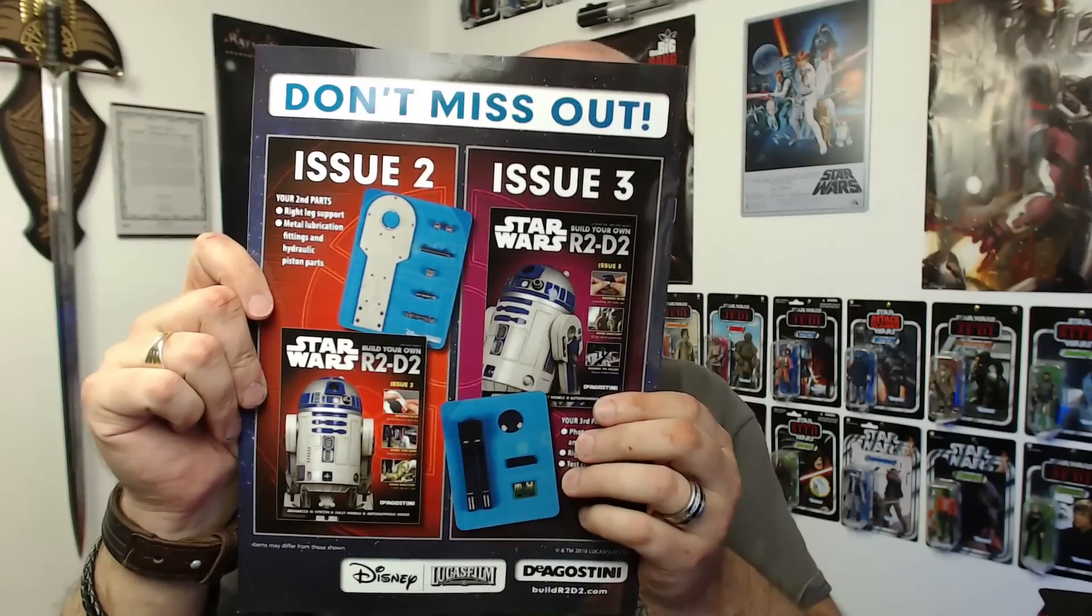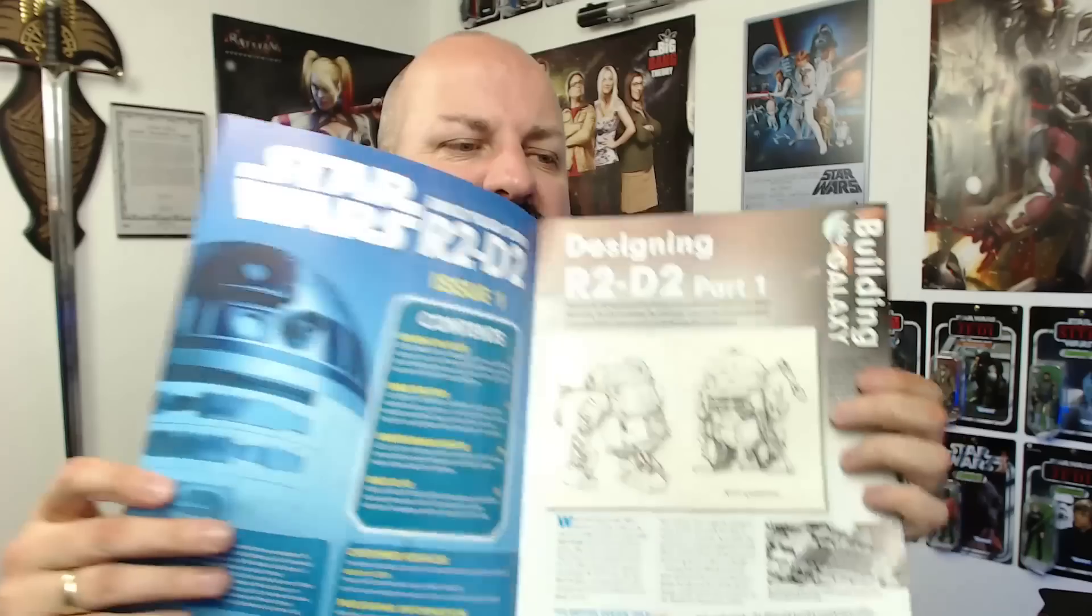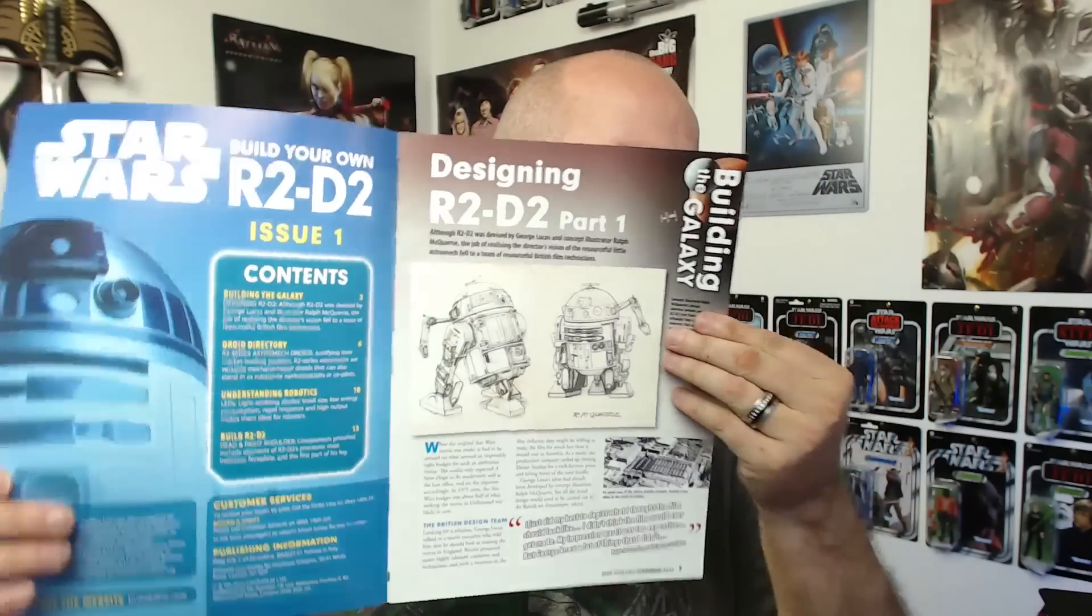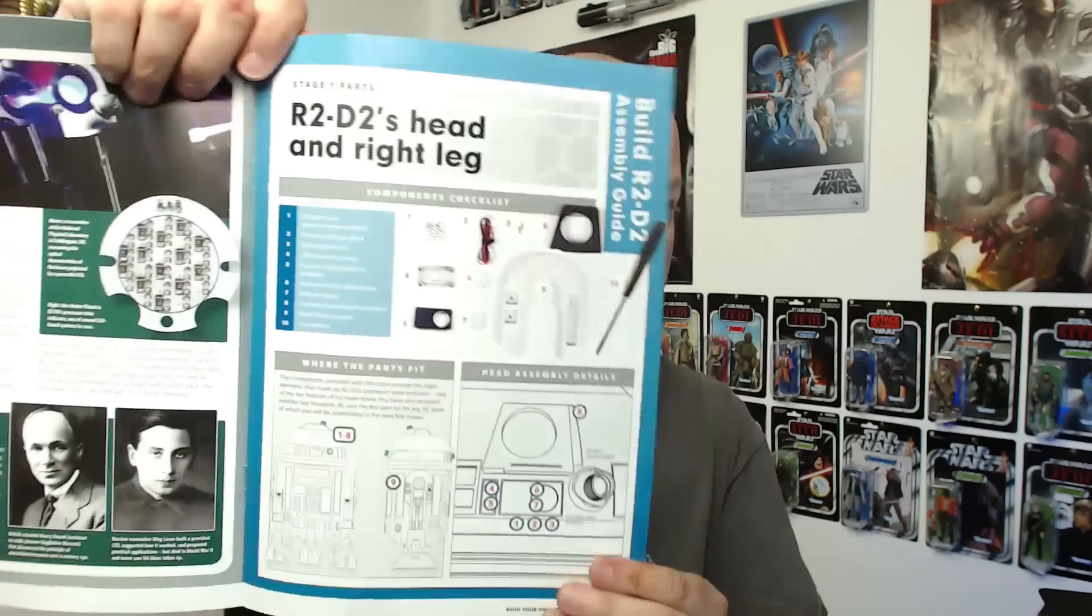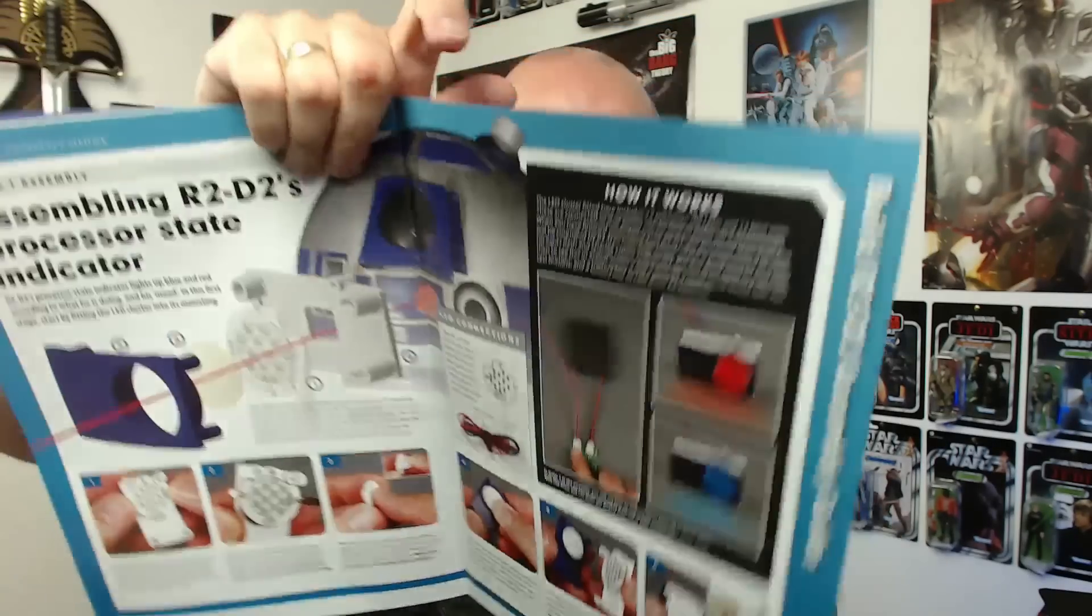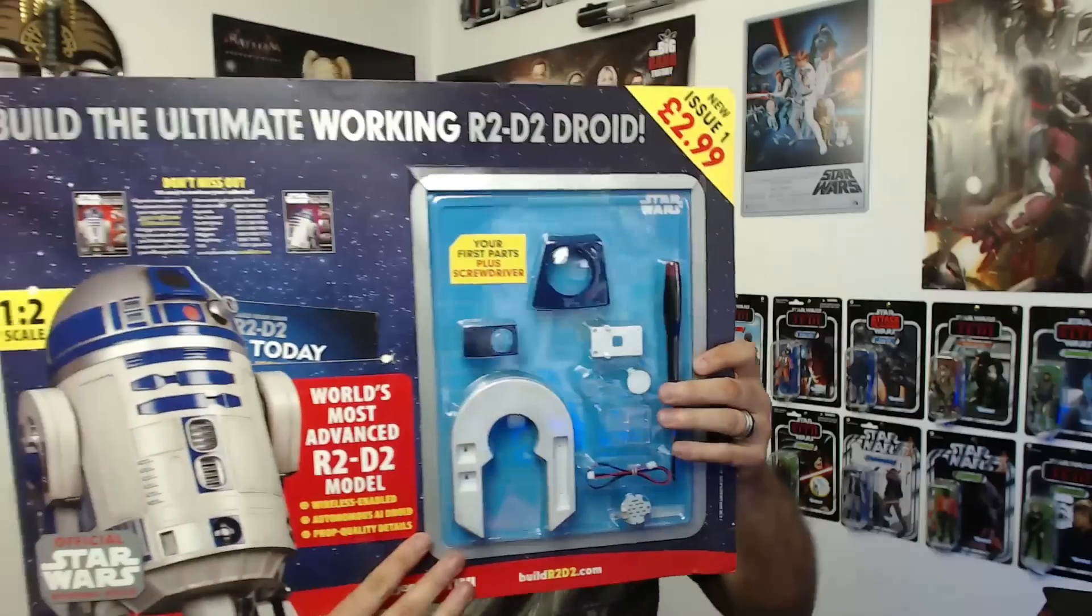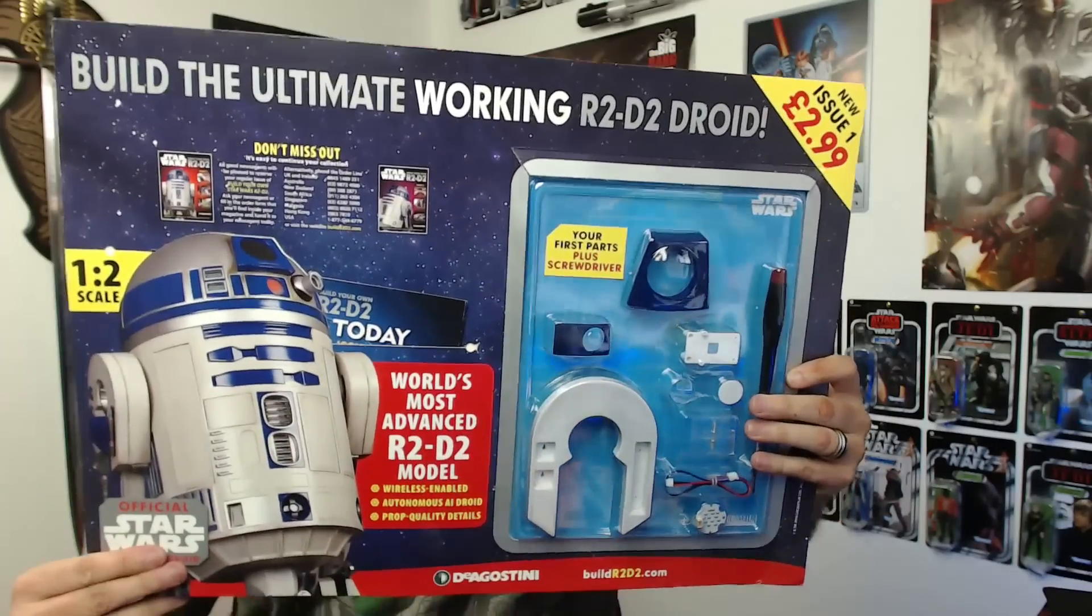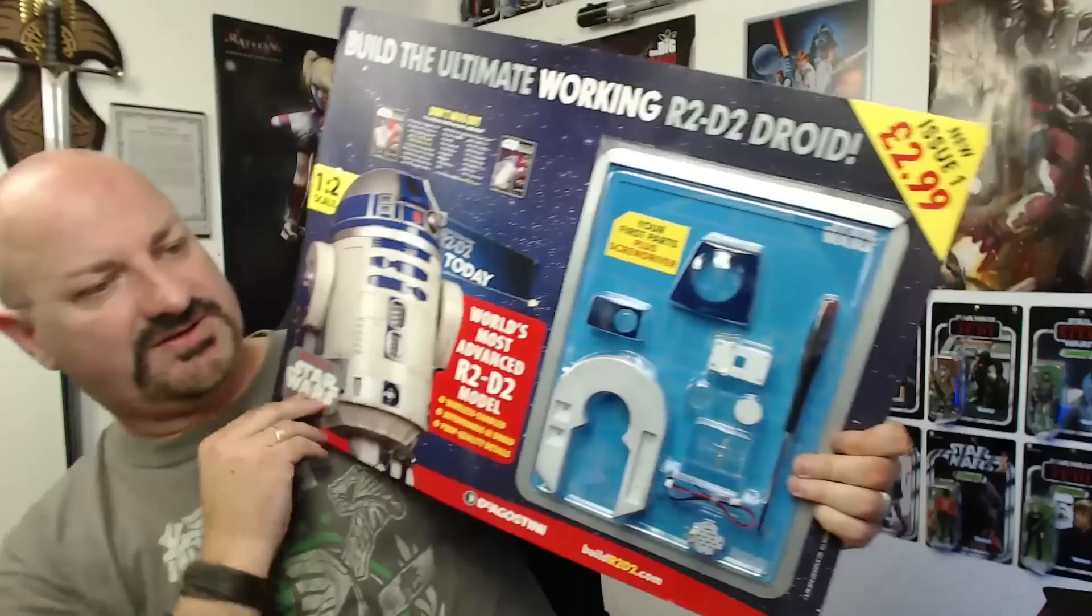And I'll explain that a bit later. First of all this is issue one and it shows you what's in issue two and issue three. These are really glossy unlike the Millennium Falcon ones which is really nice. Let me just show you some of the things that tells you about designing it. Just like the Millennium Falcon you've got the how to build it, tells you what parts come with each issue and also a lot of electrics in the first issue there as well.